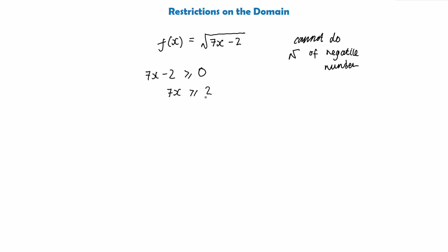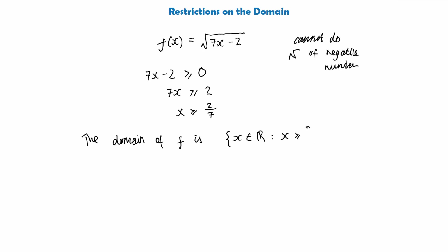To find the restriction, we require 7x minus 2 to be greater than or equal to 0. Adding 2 to both sides gives 7x is greater than or equal to 2, so x must be greater than or equal to 2 divided by 7. The domain of f is therefore the set of x being any real number, where x is greater than or equal to 2 over 7.